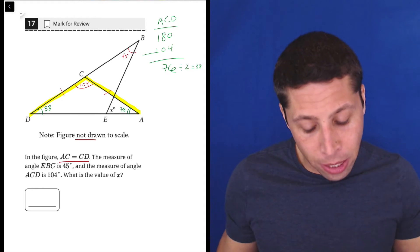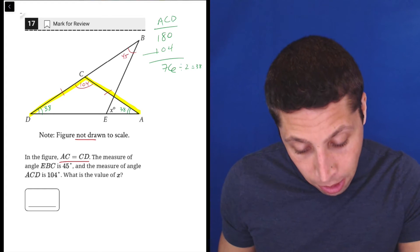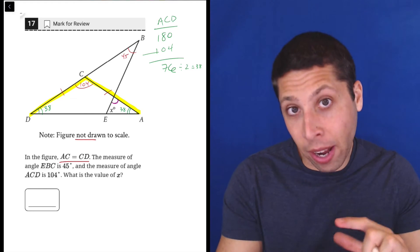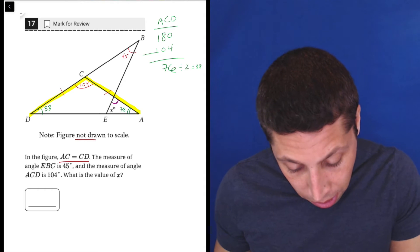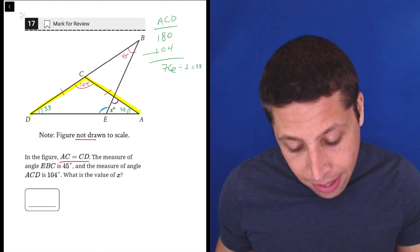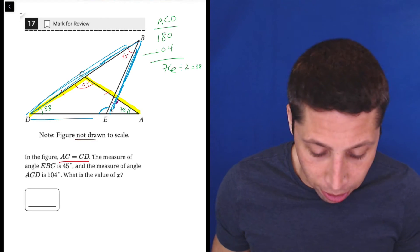Now we're getting closer to that X. But in order to get it, we need either this top angle here, because then we can use the little triangle to get that and there's a way to do that. Or we can use this angle here, which is supplementary to X. So I'm going to actually use that because I see that if I think about this kind of lopsided triangle...